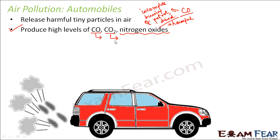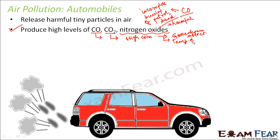Carbon dioxide, if present in the right amount, is useful because plants need it to perform photosynthesis, and all other animals depend on plants directly or indirectly for food. But if the level of carbon dioxide increases too much, a high concentration can lead to the greenhouse effect, which increases the overall temperature of the earth and makes it less suitable for the survival of living organisms.